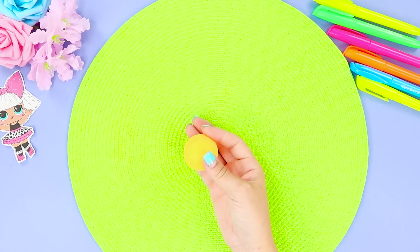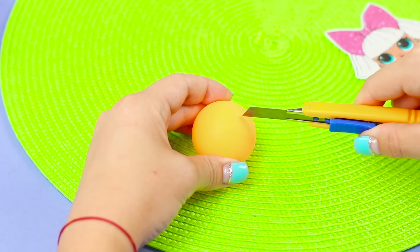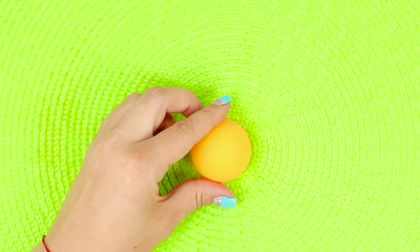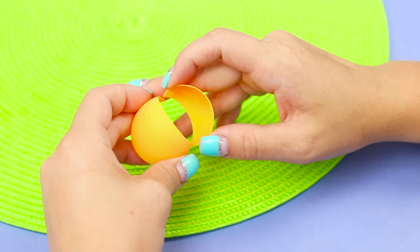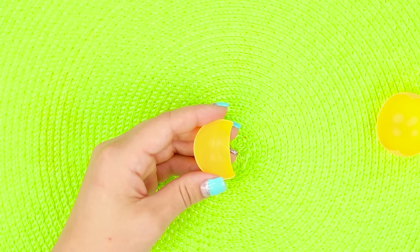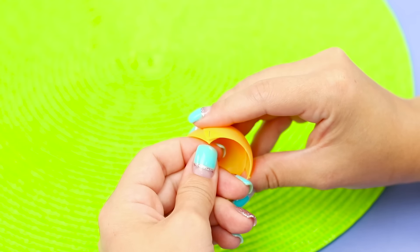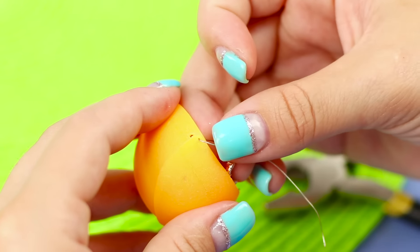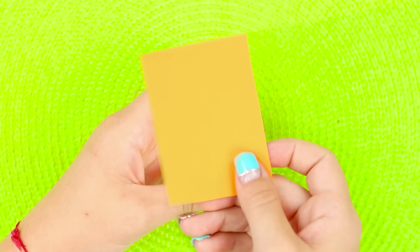And now we'll tell you what you can make out of a ping pong ball. Cut it in half. Cut off the side. Take an awl and make a pair of holes in the corners of each of the parts. Connect the pieces using wire.